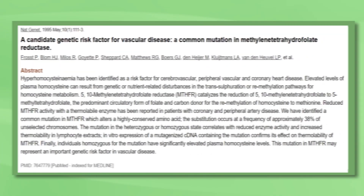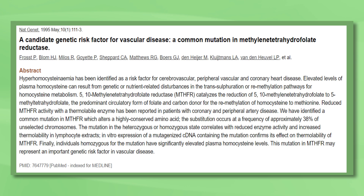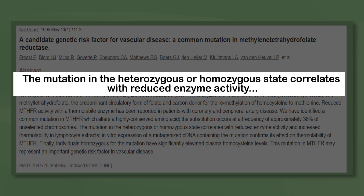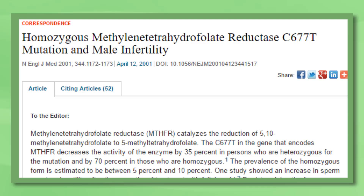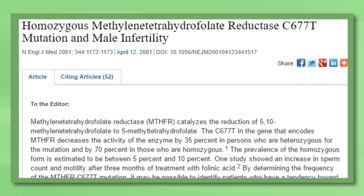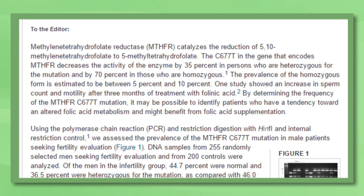Which type of MTHFR mutation is the most potentially harmful? Heterozygous A1298C is thought to be of minor consequence, if any, while heterozygous C677T may affect folate metabolism by up to 35% at worst. Homozygous mutations, as well as compound heterozygous, are considered the most severe or at risk. Some researchers say homozygous mutations can inhibit MTHFR enzyme function by up to 70%, which can have consequences for folate metabolism and related conditions, such as high homocysteine levels and folate deficiency.